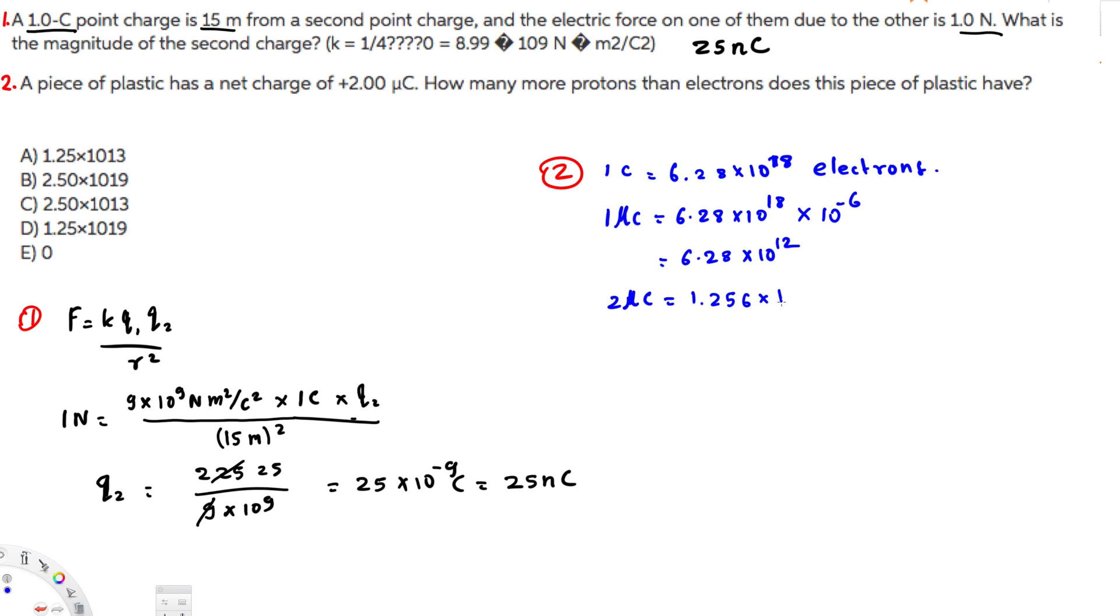Two micro coulombs is going to be 1.256 times 10 to the power of 13 electrons. But here the charge is positive, so if it's positive, it's protons. Since this is positive, this much protons we have. The question says how many more protons than electrons does this piece of plastic have? This much more. So this matches the first answer, 1.25 times 10 to the power of 13. The answer for this question is this one.